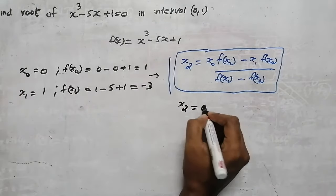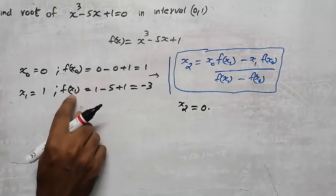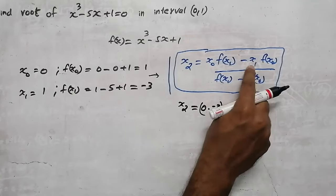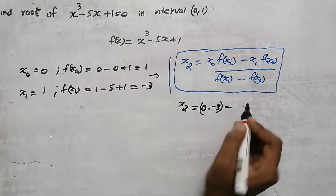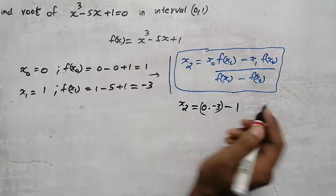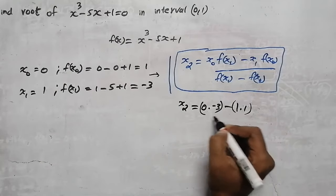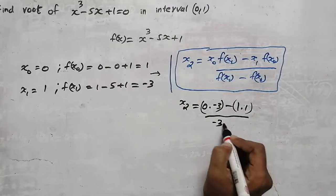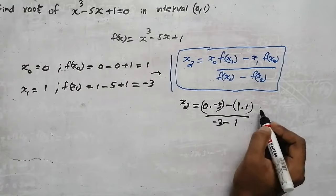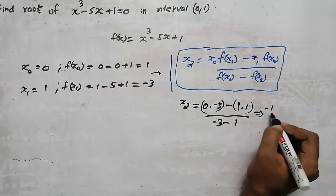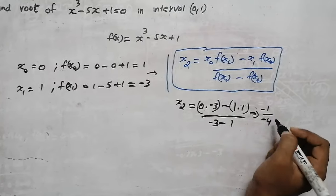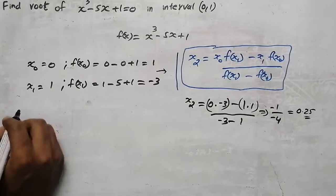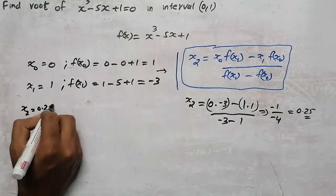Now substitute: x₂ equals x₀ times f(x₁) minus x₁ times f(x₀), all divided by f(x₁) minus f(x₀). x₀ is 0, f(x₁) is minus 3, x₁ is 1, f(x₀) is 1. Denominator: f(x₁) minus f(x₀) = minus 3 minus 1 = minus 4. So x₂ equals minus 1 divided by minus 4, which is 0.25.